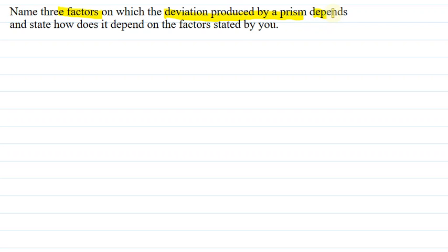The deviation produced by a prism depends on certain factors, and we need to state how it depends on the factors we select. Let us see the answer for this question.